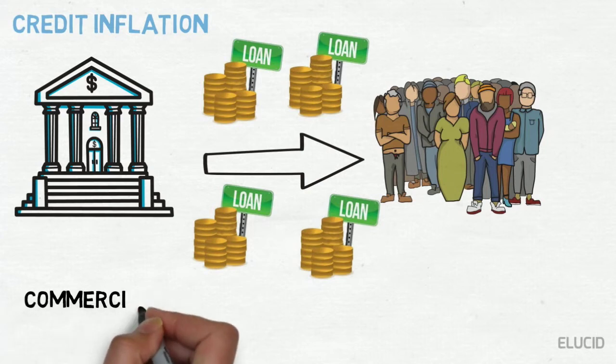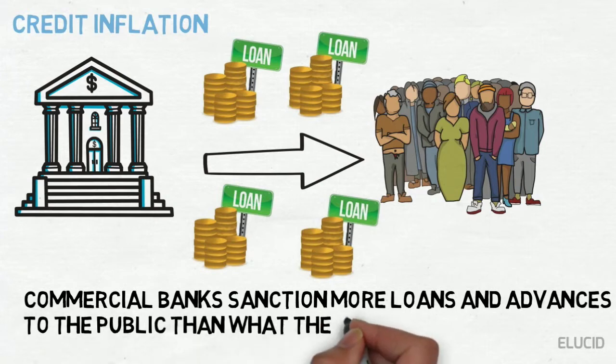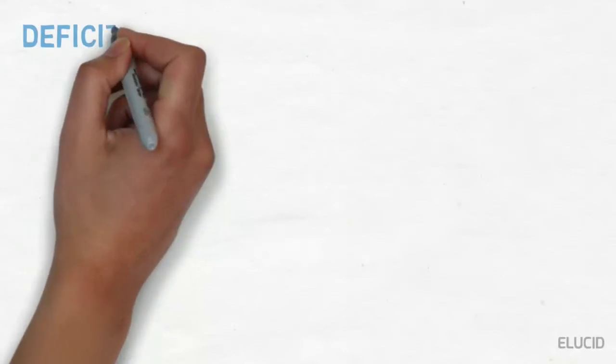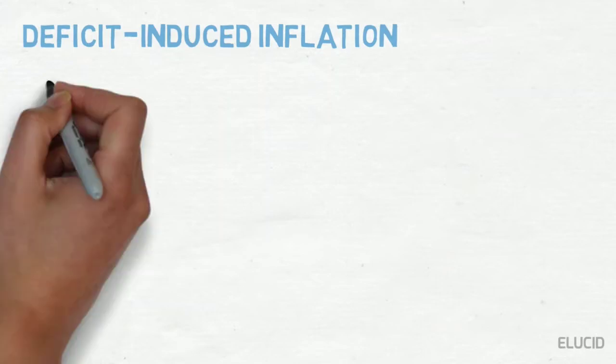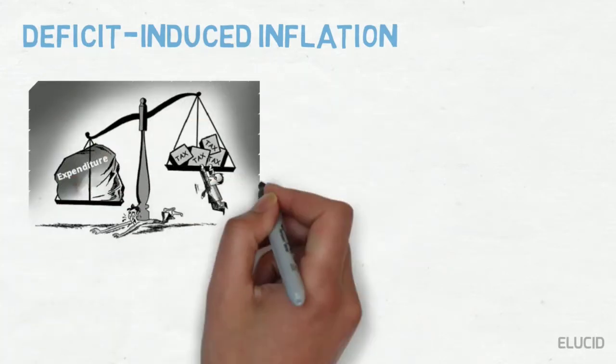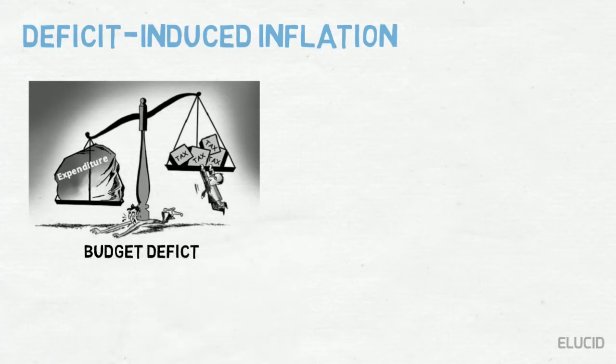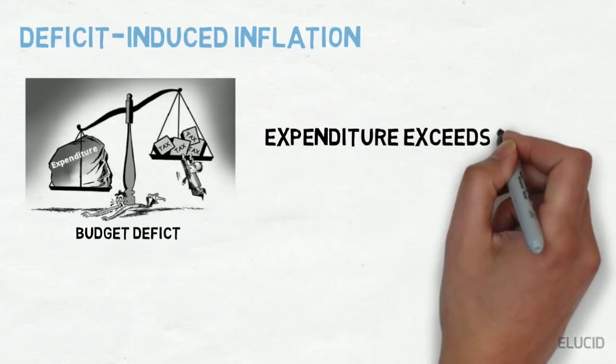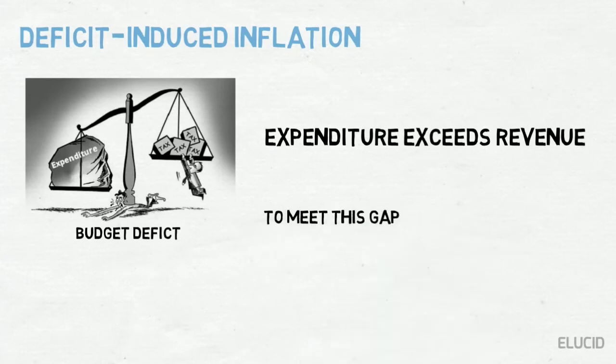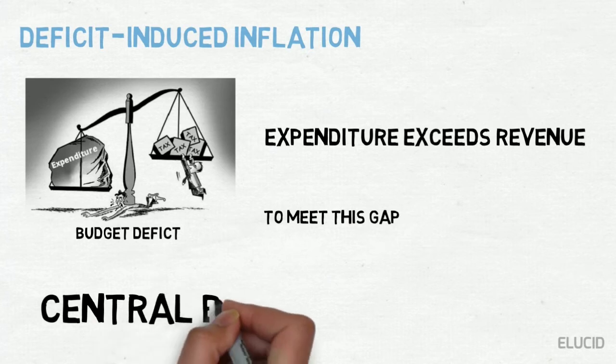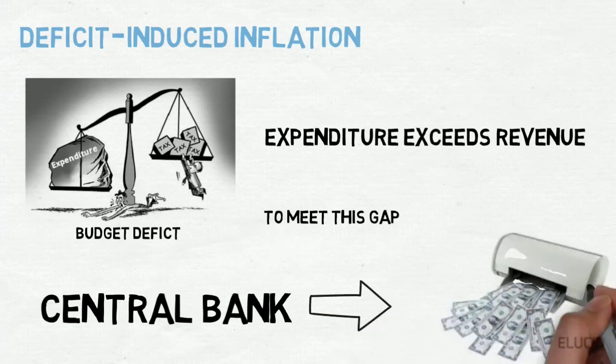Deficit-induced inflation. The budget of the government reflects a deficit when expenditure exceeds revenue. To meet this gap, the government may ask the central bank to print additional money. Since pumping of additional money is required to meet the budget deficit, any price rise may be called deficit-induced inflation.